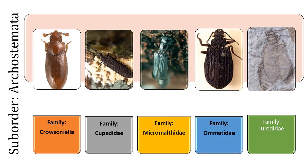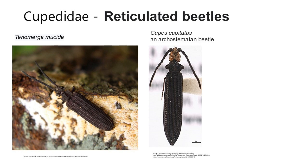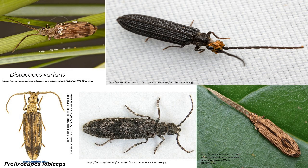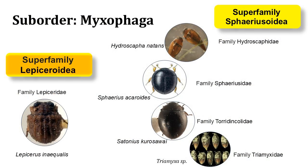Let's look at each of the suborders and the beetles found under them. Suborder Archostemata includes some of the most primitive and ancient beetle lineages. It comprises a single family, Cupedidae, commonly known as the reticulated beetles. These beetles are characterized by their elongated bodies, long antennae and distinctive wing venation patterns. They are found in various parts of the world, mostly in moist, forested environments, and play a role in the process of decomposition.